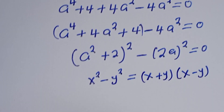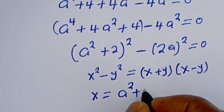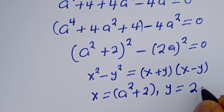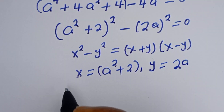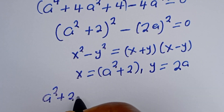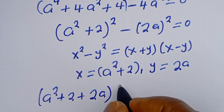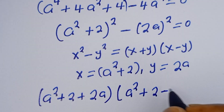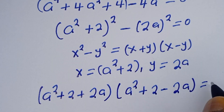From this equation, x is equal to a squared plus 2, and y is equal to 2a. Then if you substitute, we have (a squared plus 2 plus 2a)(a squared plus 2 minus 2a) is equal to 0.